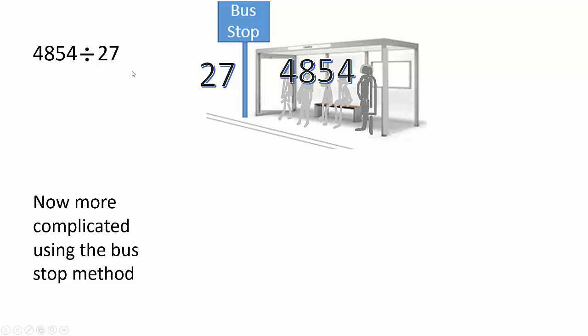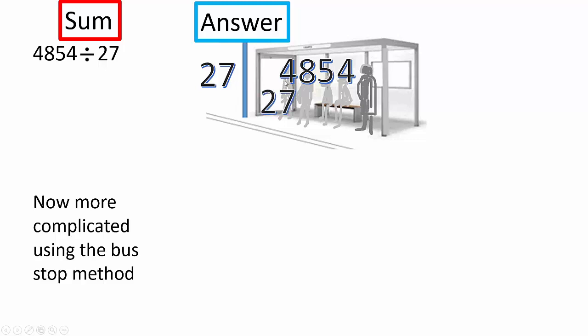Let's start. 27 into 4854. Well, that won't go. 27. So, let's bring down the 4 and bring down the 8. 27 into 48. 27 times 2 is 54, so it can only be 1. 27 times 1 is 27.